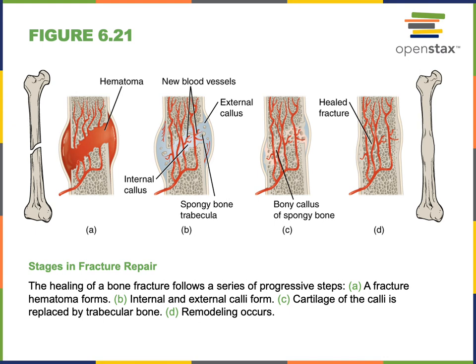Then the formation of an internal and external callus occurs, where osteogenic cells from the bone membranes differentiate into osteoblasts and fill in spongy bone in order to help hold together the bone fragments. There will also be chondroblasts that migrate in and create cartilage to help stabilize the bone fragments. So the internal and external callus are a mixture of both spongy bone and cartilage.